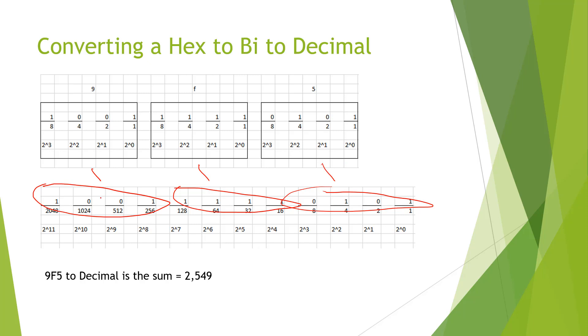And we convert that into decimal. Again, we add where the ones are at. 2048 plus 256 plus 128 plus 64 plus 32 plus 16 plus 4 plus 1 equals 2549.